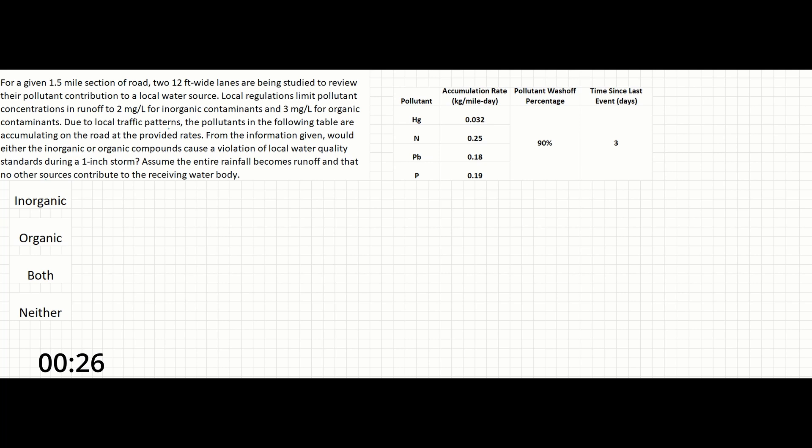Due to local traffic patterns, the pollutants in the following table are accumulating on the road at the provided rates. From the information given, would either the inorganic or organic compounds cause a violation of local water quality standards during a one-inch storm? Assume the entire rainfall becomes runoff and that no other sources contribute to the receiving water body.